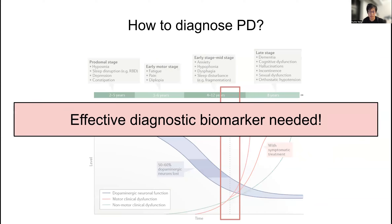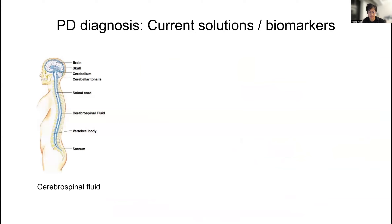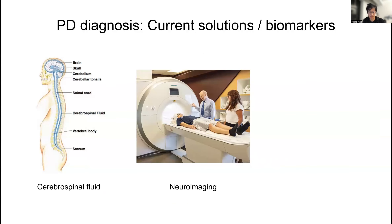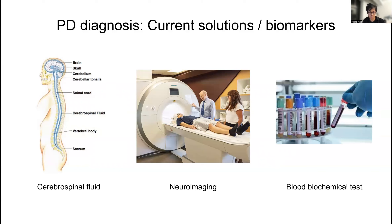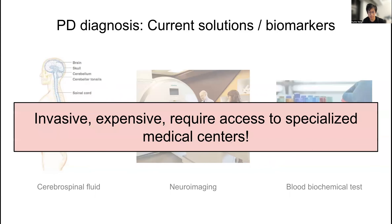There is a strong need for new diagnostic biomarkers, particularly ones that can detect the disease at an early stage. Over the last years, researchers have studied cerebrospinal fluid, neuroimaging tests, and blood biochemical tests as potential methods to detect Parkinson's. However, such approaches are invasive, expensive, and require access to specialized medical centers, hampering regular testing that could lead to early disease detection or continuous monitoring of its progression.